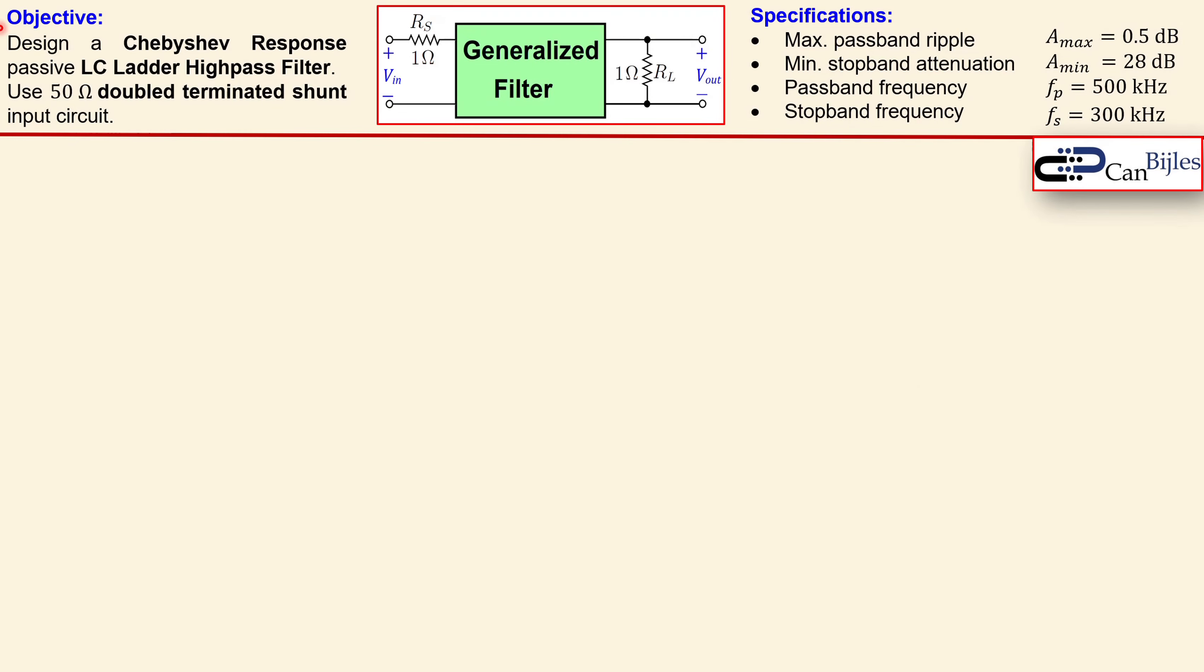So let's look at our objective. The design is a Chebyshev response filter. It must be an LC ladder high pass filter and we need to use 50 ohm double terminated shunt input circuit. The generalized circuit is shown here, the filter and also the RS and RL, the source resistor and the load resistor in the normalized values of 1 ohm each.